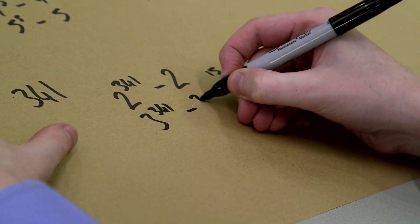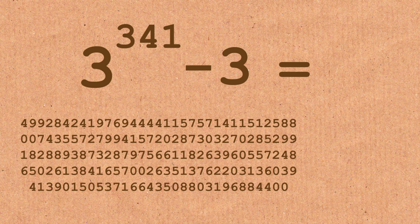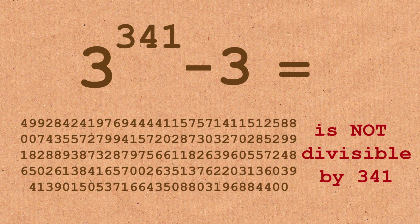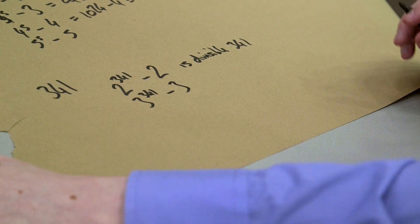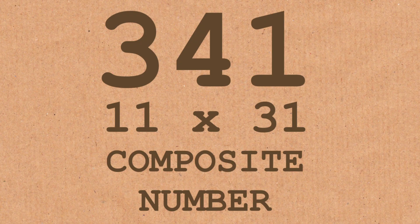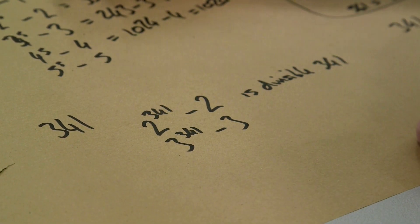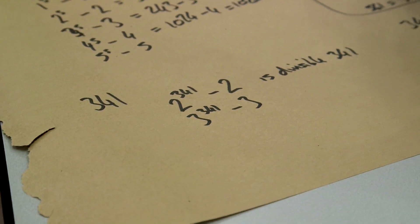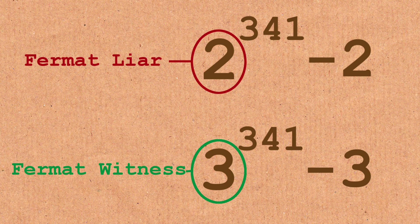Let's try another test with a=3. We do 3 to the power of 341 minus 3. Is this divisible by 341? This is where it fails the test — it is not divisible. If it's not divisible, that tells me it's a composite number. There only needs to be one exception; it's very easy to fail this test. The more tests you pass, the more evidence you have of being prime. If a composite number passes the test, that base number — in this case 2 — is called a Fermat liar. The number 3, which revealed it was composite after all, is called a Fermat witness.